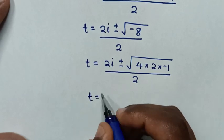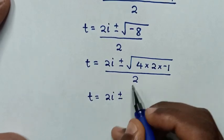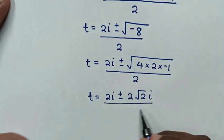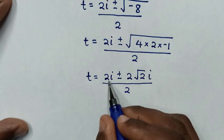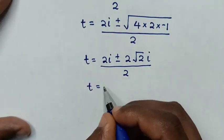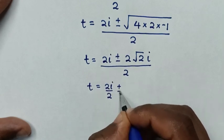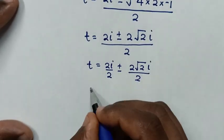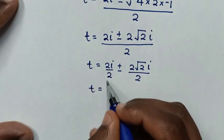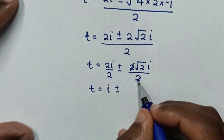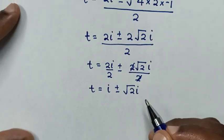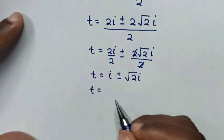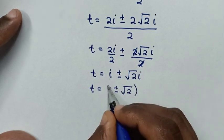Then our equation will be t equals 2i plus or minus square root of negative 8, which is the same as square root of 4 times 2 times negative 1, over 2. So it will be t equals 2i plus or minus square root of 2 times square root of negative 1, which is i, over 2. Then we take i out of the bracket, so it will be t equals 1 plus or minus square root of 2, bracket i.